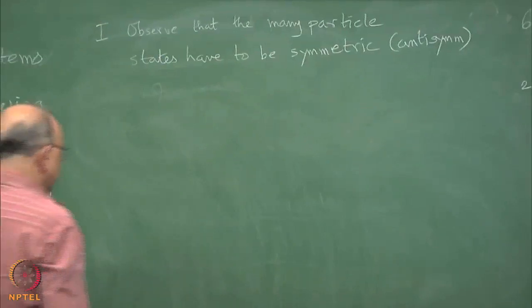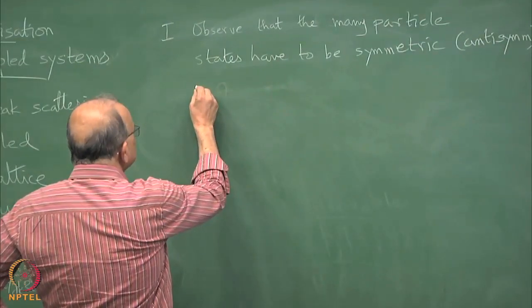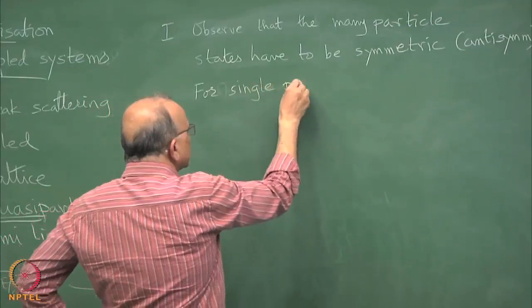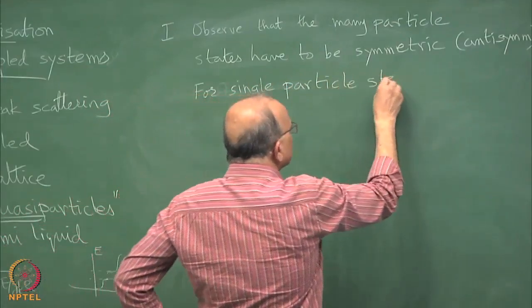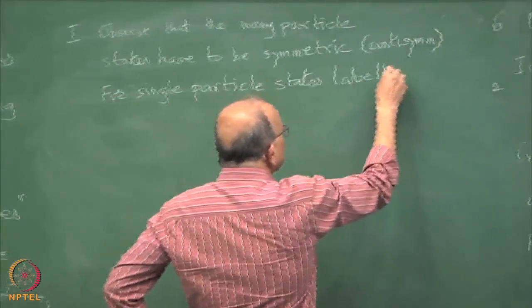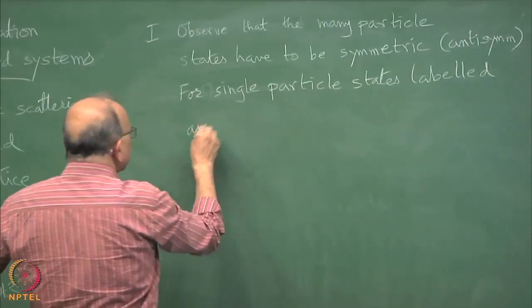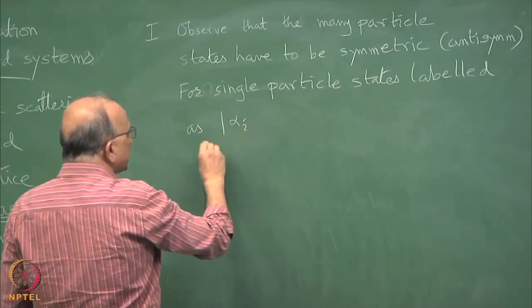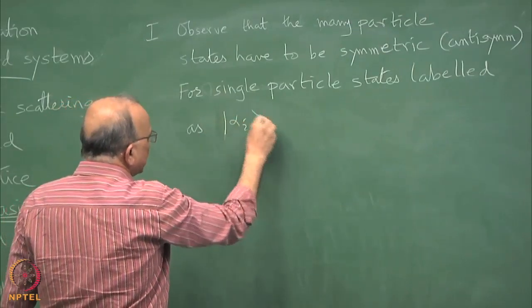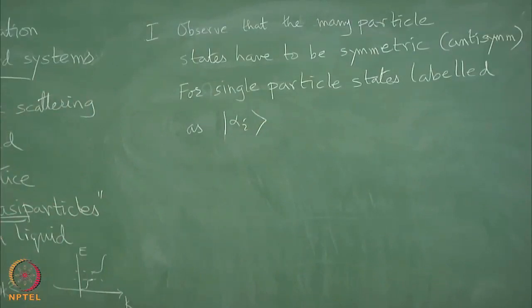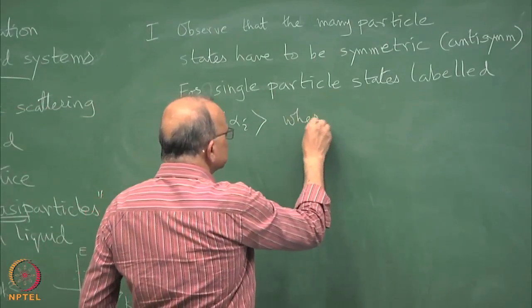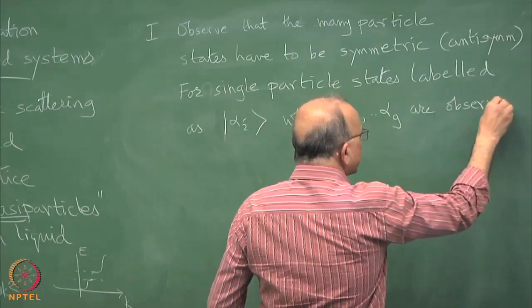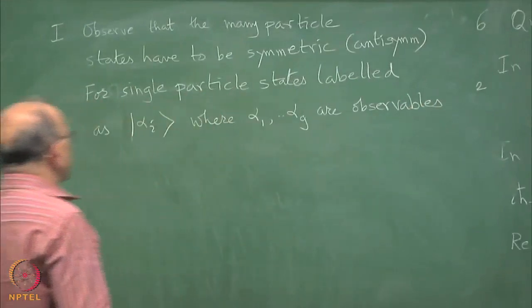Suppose I had 5 particles, suppose we have a list of quantum numbers. Suppose I have single particle quantities. Single particles states labeled as some set of observables alpha i.